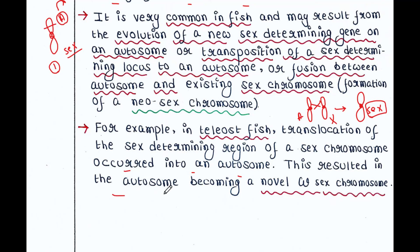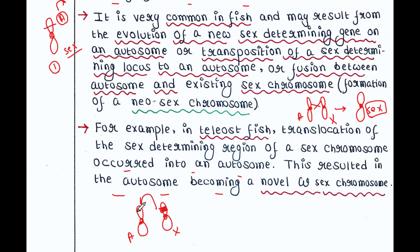For example, in teleost fish, translocation of the sex-determining region of a sex chromosome into an autosome resulted in that autosome becoming a novel W sex chromosome. In the experiment, the sex-determining region of the X chromosome translocated into an autosome, and that autosome became a new — novel W — sex chromosome.